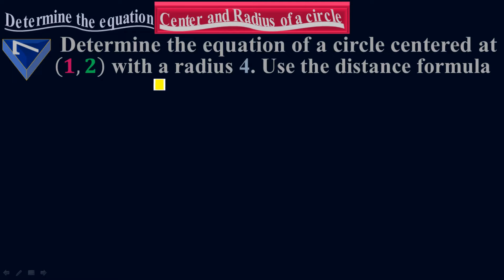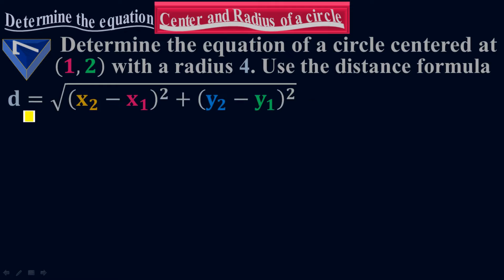It is centered, so my h is 1 and my k is 2 and my r is 4. It is the radius. From the formula of the distance, which is d equals to under root of x sub 2 minus x sub 1 to the whole square plus y sub 2 minus y sub 1 to the whole square. This is the distance formula.